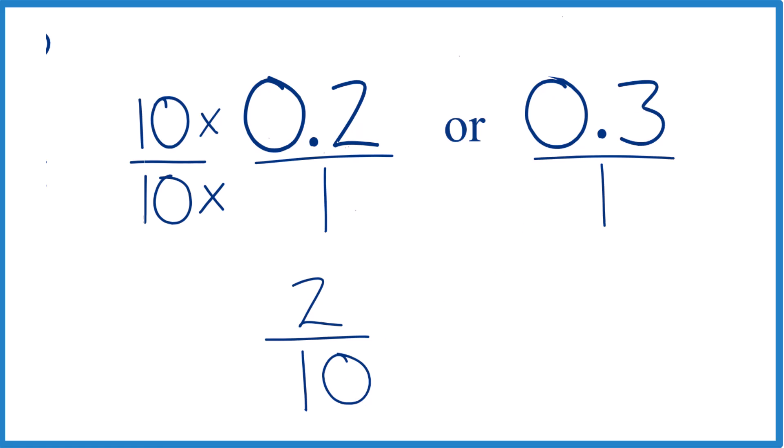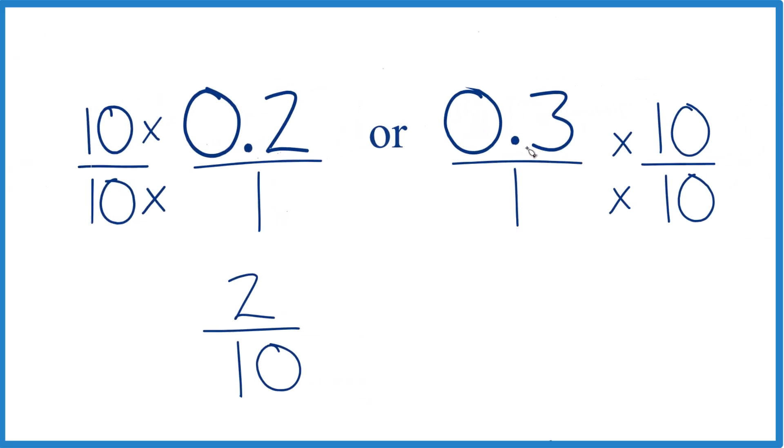Over here, let's do the same thing. So 0.3, 0.3 times 10, that's 3, and 1 times 10 is 10. And now same denominators, compare the numerators.